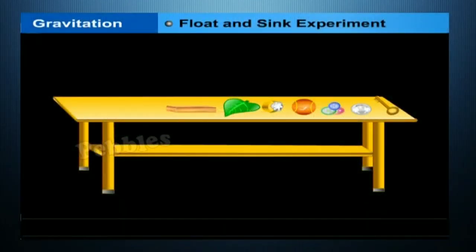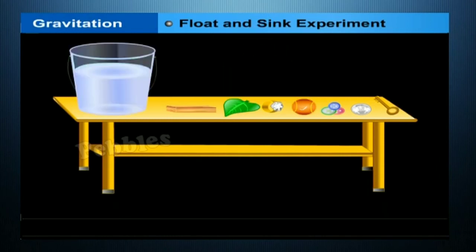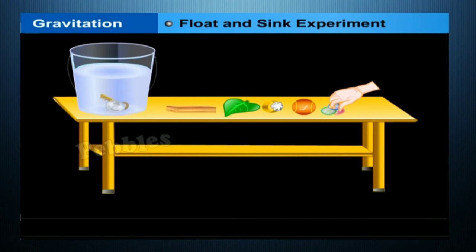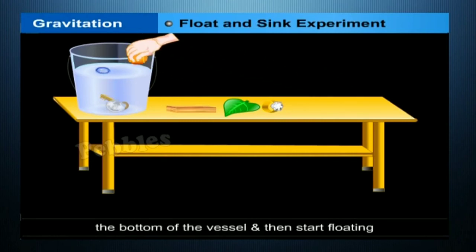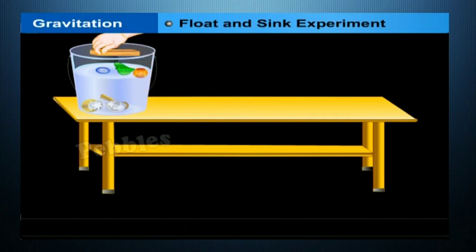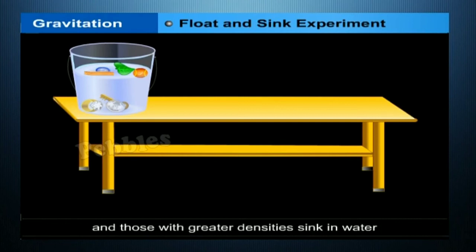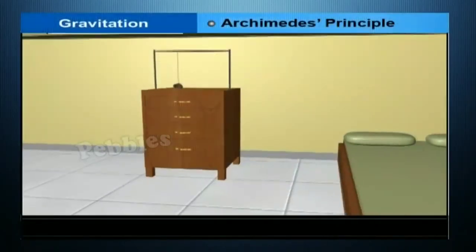Float and sink experiment: collect different substances such as an iron nail, ring, plastic buttons, coin, wooden chunk, and leaf, and put them one by one in a glass or bucket of water. Observe whether each substance floats or sinks. Some items sink to the bottom, while others float. We infer that materials with densities less than that of water float, and those with greater densities sink.